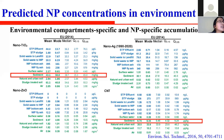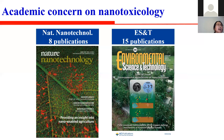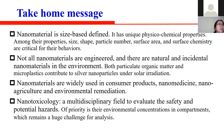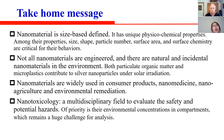These estimated concentrations provide ecotoxicologists and risk assessors with crucial exposure data. There are special issues in Nature Nanotechnology and Environmental Science and Technology concerning opportunities and challenges in nanotechnology. In summary: nanomaterials are size-based defined with unique physical-chemical properties; size, shape, particle number, surface area, and surface chemistry are critical for their behavior in the environment. Not all nanomaterials are engineered — there are natural and incidental nanomaterials in the environment, and both particulate organic matter and microplastics contribute to silver nanoparticle formation under solar irradiation.